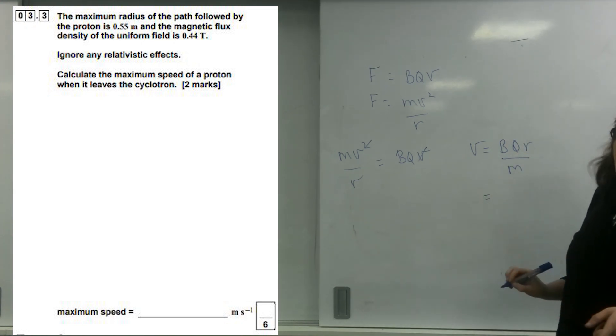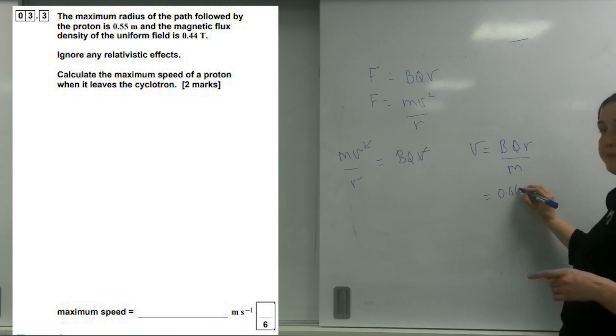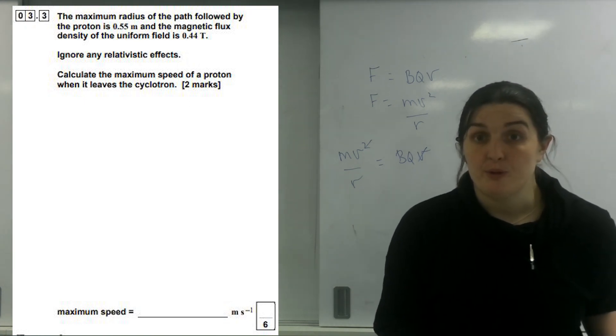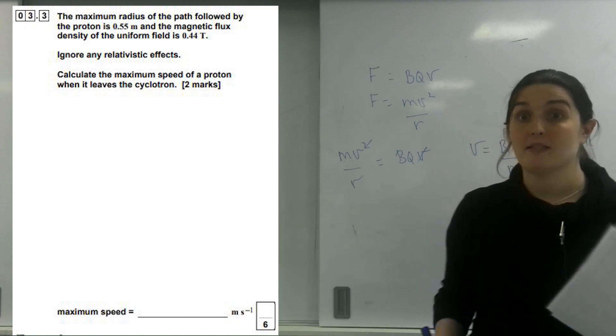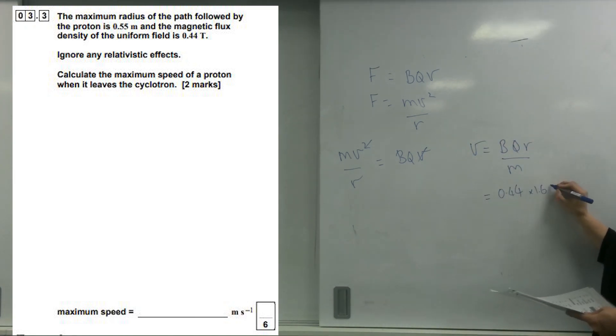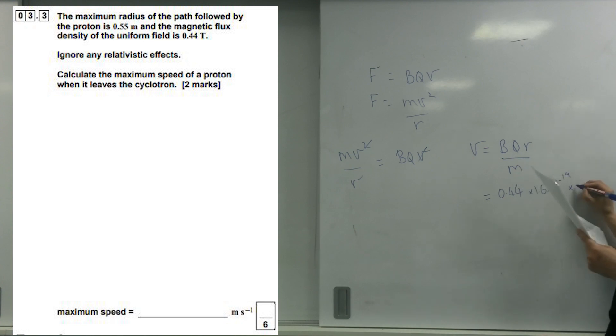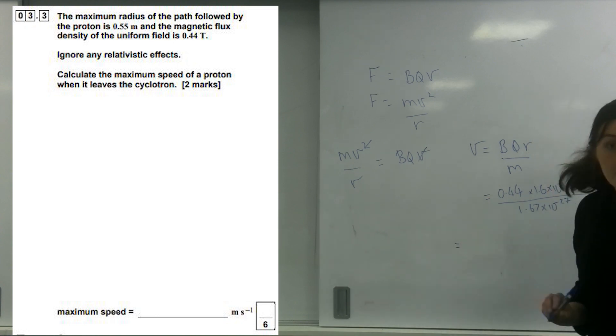I know that b is 0.44 tesla. I know that q is a proton and they'll be difficult for this. They won't give you the mass of the proton and they won't give you the charge of the proton, you have to know it. So the charge of a proton is 1.6 times 10 to the minus 19. The mass of a proton, which is in the data sheet, is 1.67 times 10 to the minus 27. The radius was 0.55 and this was 1.67 times 10 to the minus 27.